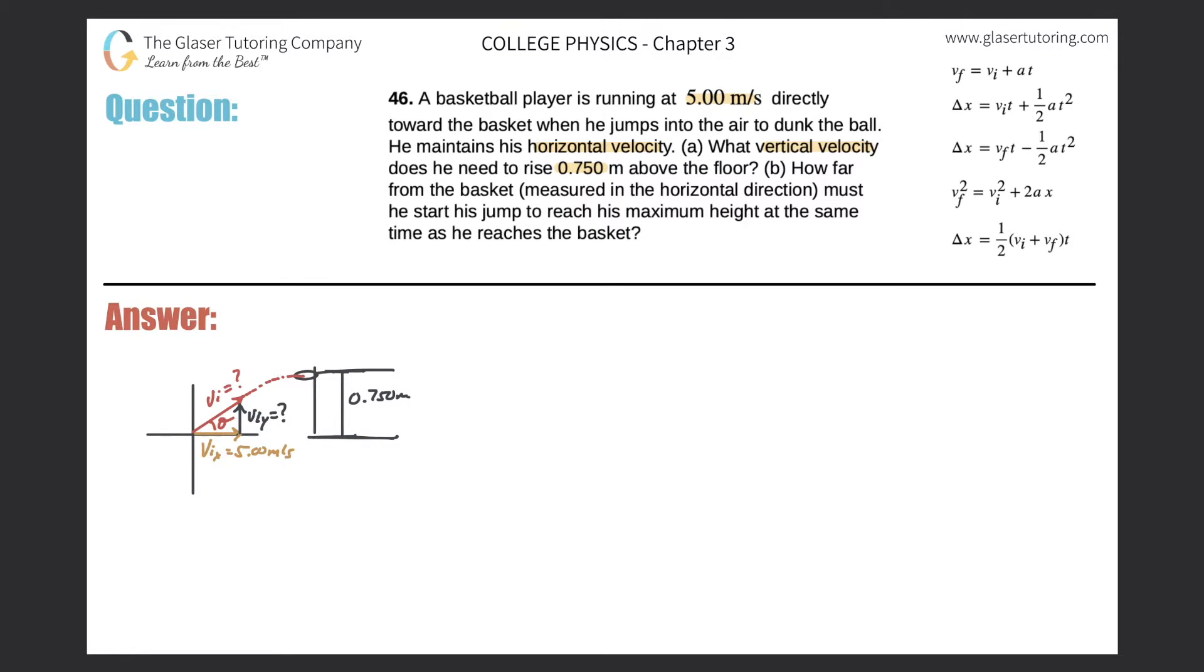We want to find what is his initial velocity in the y direction in order to jump this height from this location to that location, which is 0.75 meters. So how do we do that? Let's state the knowns and unknowns that we know.